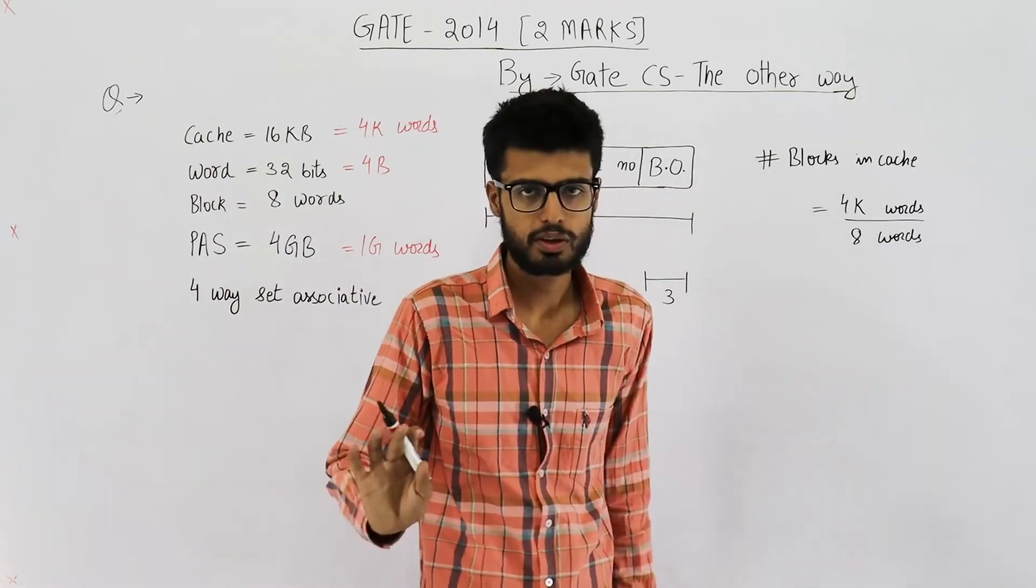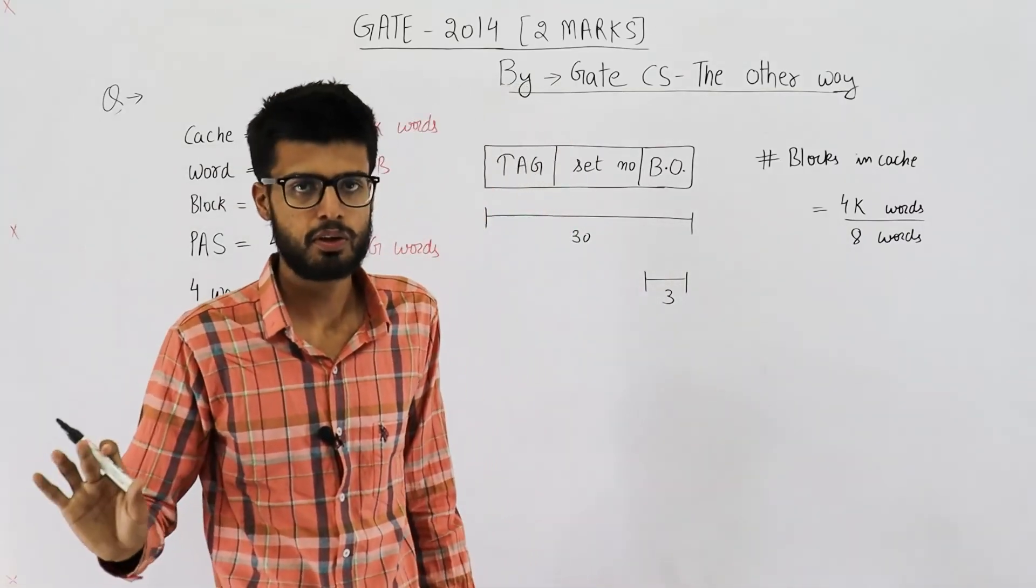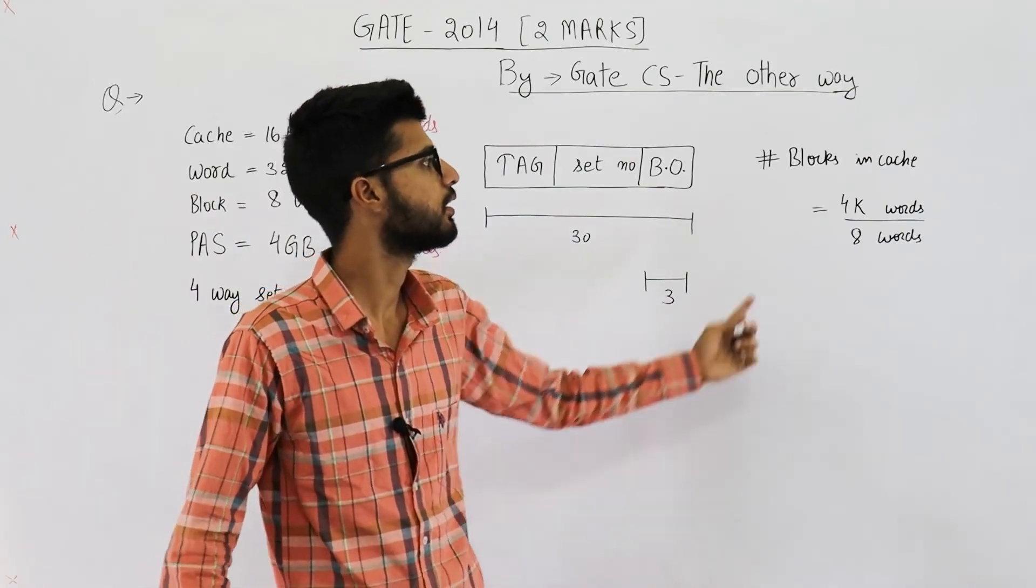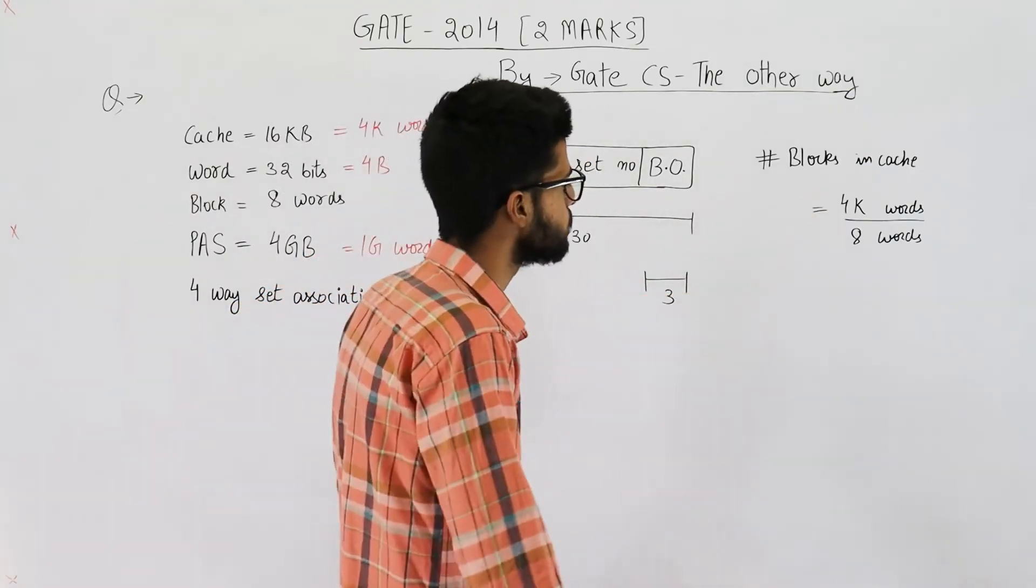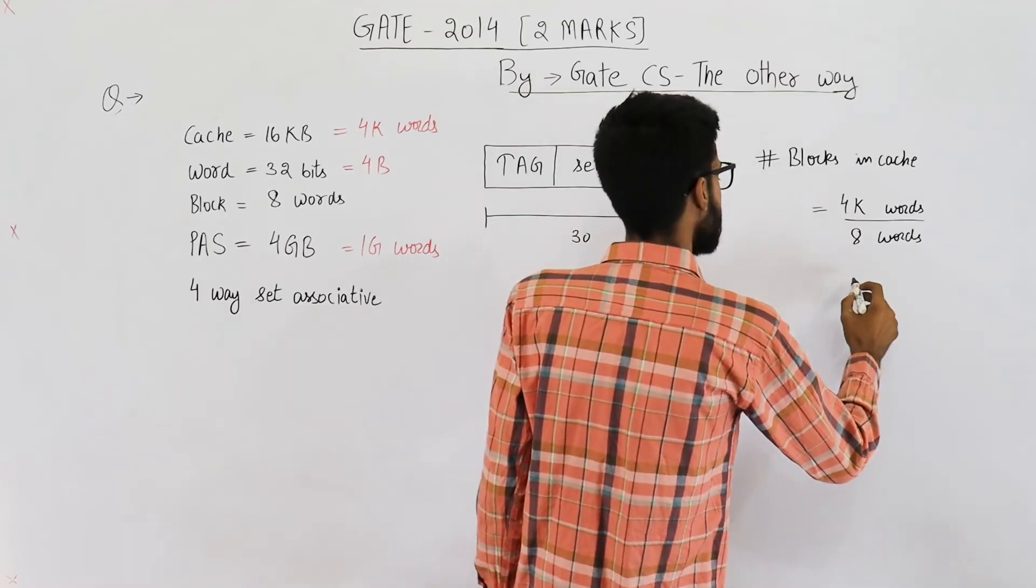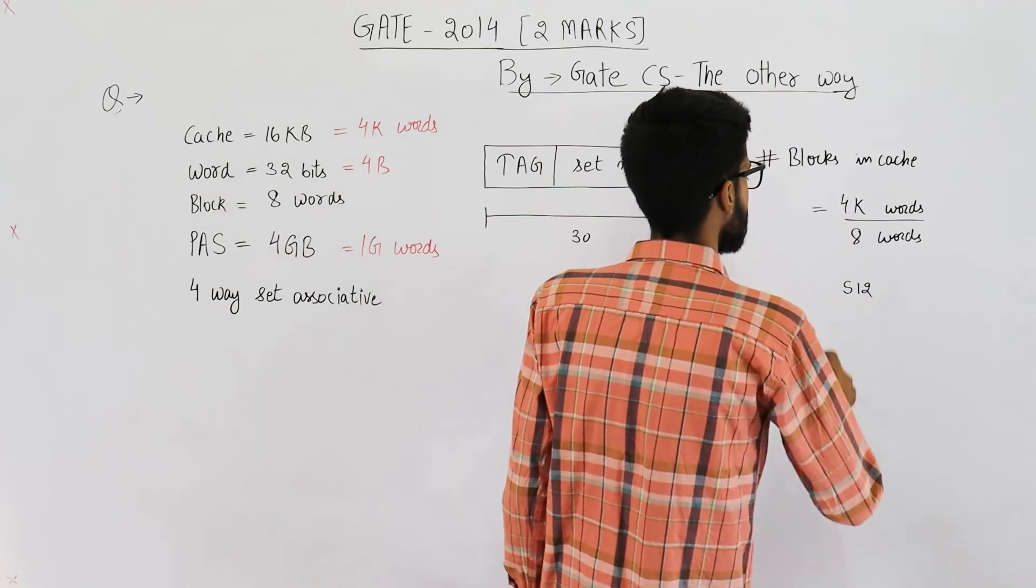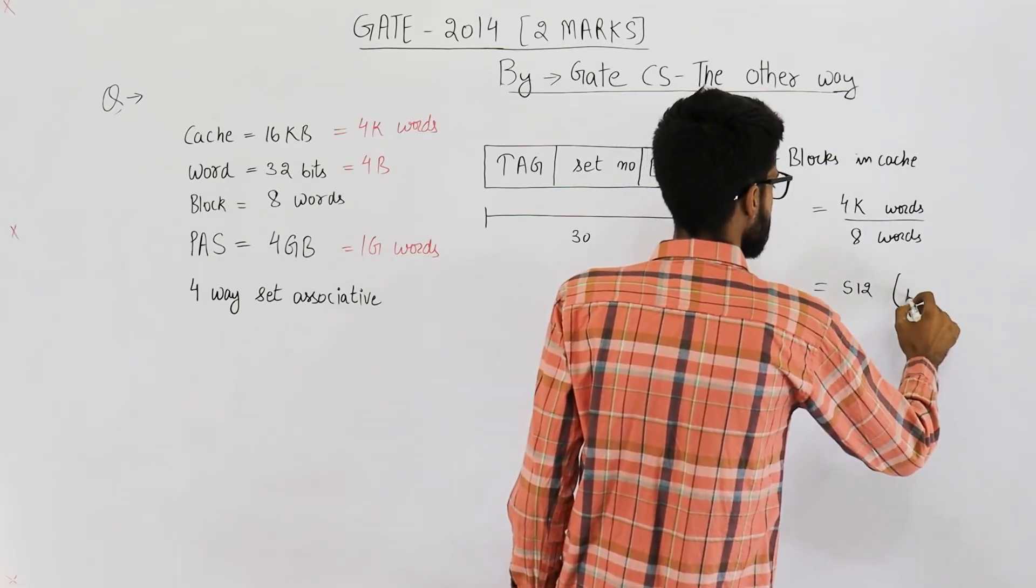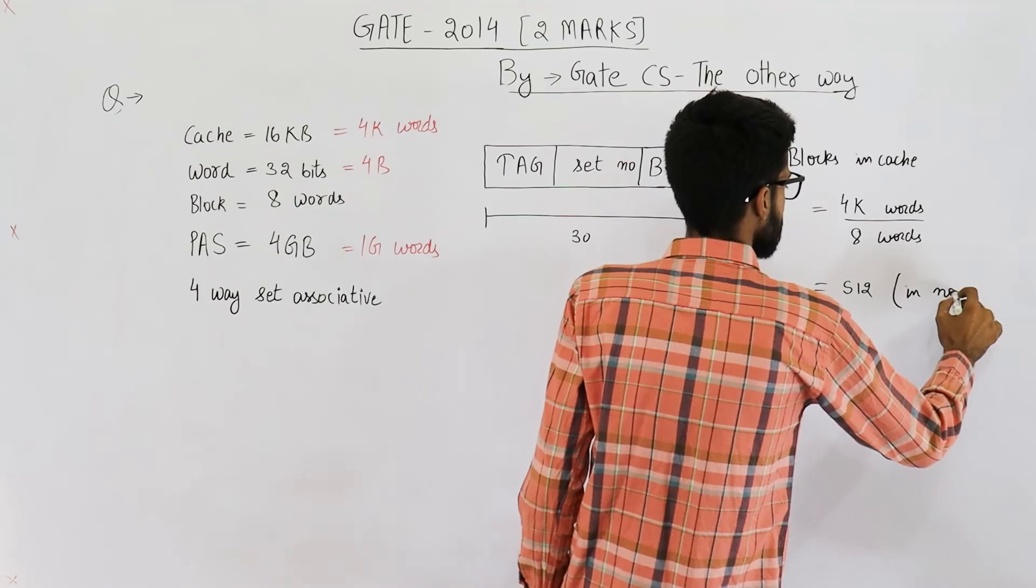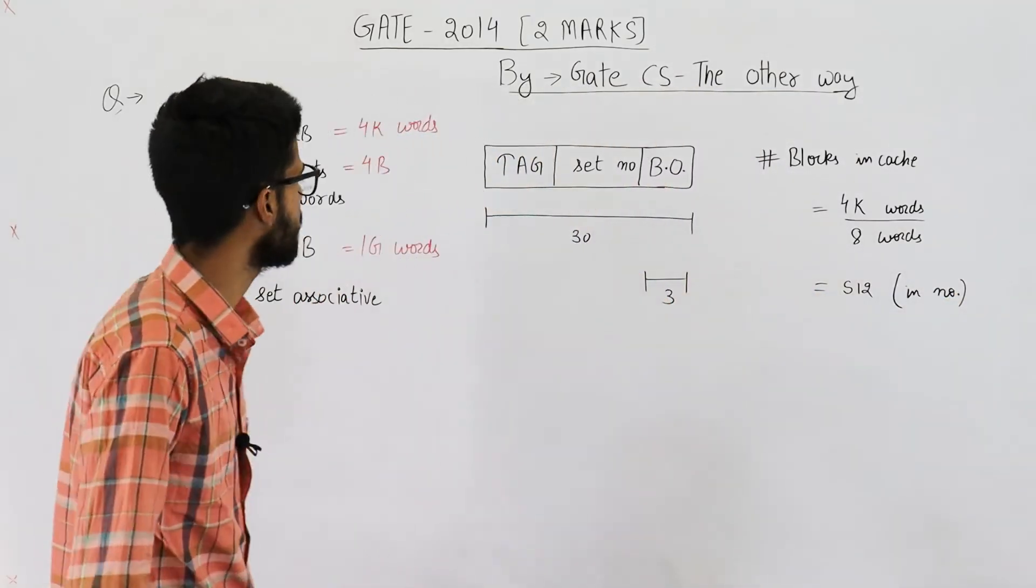So words and words will get cancelled, so the unit of this will be just no unit. It is just the number of blocks. So it is K by 2. K is 1024 and K by 2 will be 512. So we have 512 blocks. So this is 512 in number or in count.